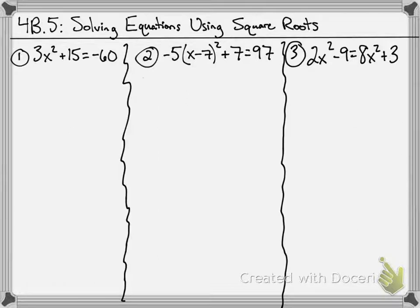In order to solve equations using square roots, your goal is to get the x by itself. More specifically, we're looking to isolate the x squared term using what you know about solving equations. Here are three examples that are pretty common in terms of how you would solve and see these different types of equations. Let's go ahead and work through them.